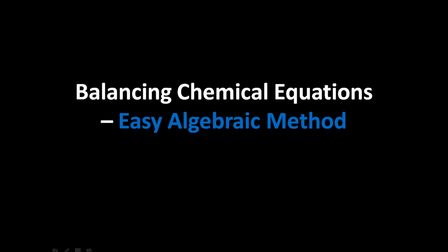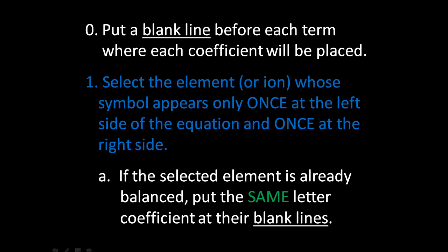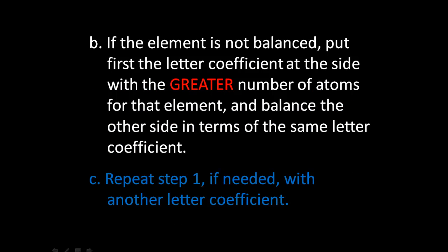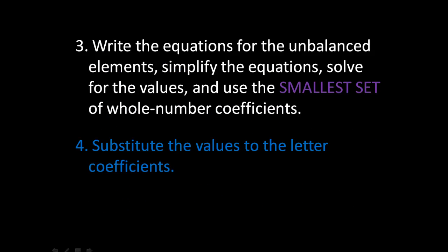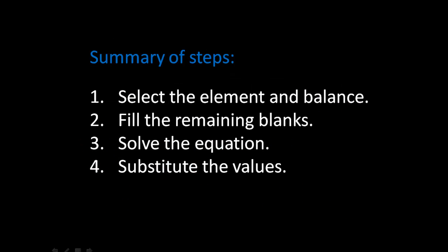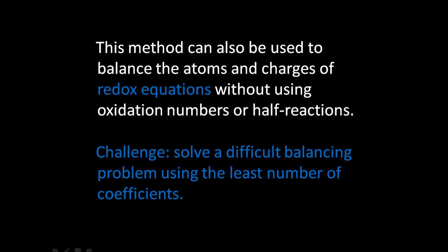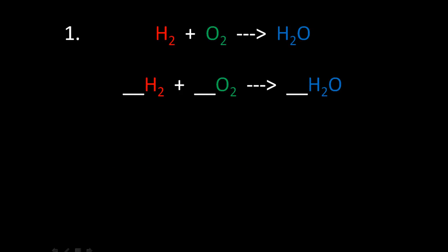The preliminary step of putting a blank line before each term, where we will put its coefficient, has already been done. Step one: select the element or ion whose symbol appears only once at the left side of the chemical equation and also once at the right side.